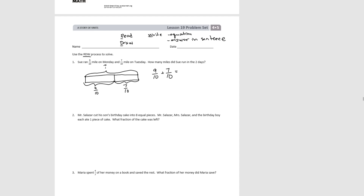We're writing our equation now to solve the problem. Nine plus seven is sixteen, so she ran sixteen-tenths of a mile. Since the numerator is greater than the denominator, we know we can write this as a mixed number. Ten-tenths is one, plus six-tenths, equals one and six-tenths. We write our answer in a complete sentence: Sue ran one and six-tenths miles in two days.